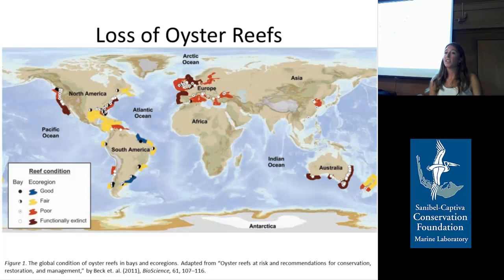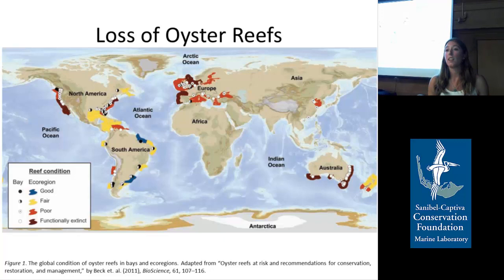Oyster reefs are facing a lot of stresses, mostly from human activity. They're destroyed to make shipping lanes, and they have to deal with pollution, salinity changes, sedimentation, and disease. Probably their biggest threat over the last 130 years has been overharvesting, which can destroy the reef and the 3D structure.